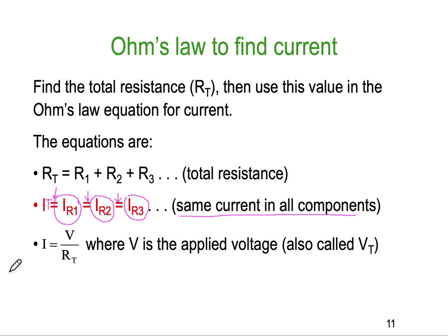So, if I happen to know what the applied voltage is, the voltage total, and I know what the resistance total is, I can simply use I equals V on R to work out the current, where V is the applied voltage and also called V total.